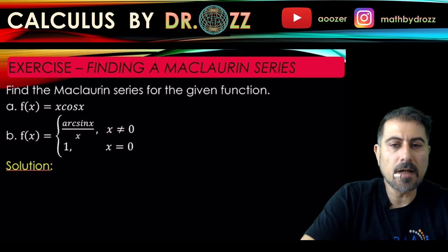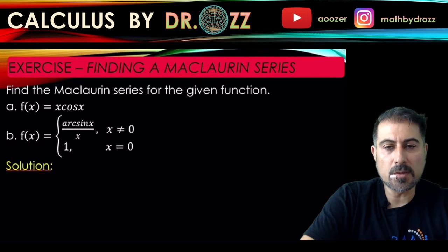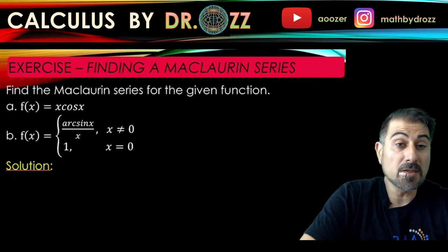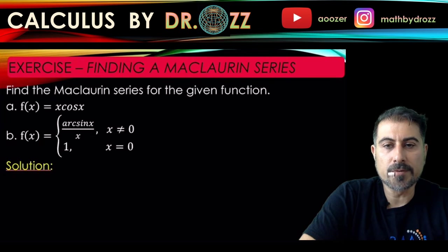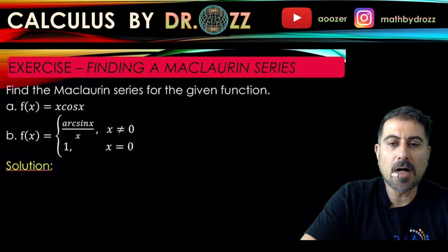Arc sine x over x is not defined at zero, but see if there is a removable discontinuity or jump discontinuity. Check for your own reference, but for this problem we don't need that.